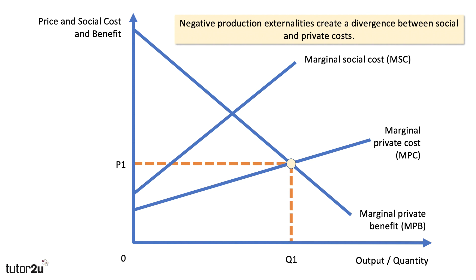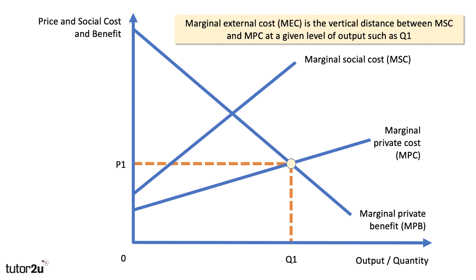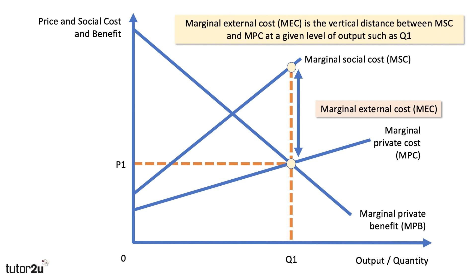So negative externalities create a divergence between social and private cost. If there are negative externalities, then we must add the external costs to the firm's supply curve to find the marginal social cost curve — MSC. The marginal external cost is the vertical distance between social and private cost for any given output level. Taking output level Q1, the marginal external cost is simply that vertical distance between social and private cost. That's the externality.